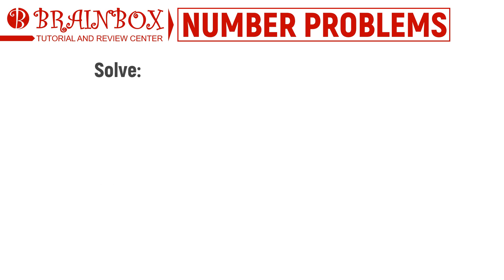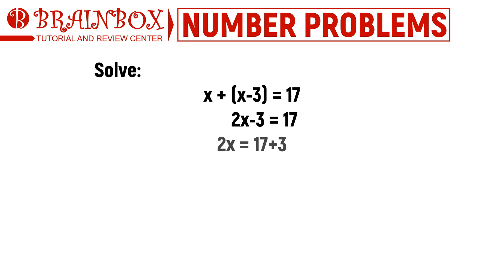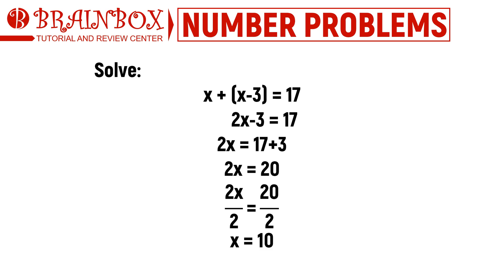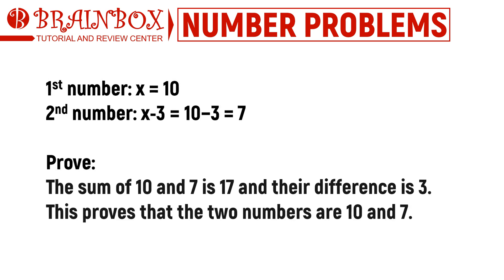We now move on to solving this equation. From here we get x equals 10. A special caution: the value of x in the equation is not always the final answer. The next step is to substitute x back into the representations. The first number, represented as x, is 10 — our larger number. Since the lesser number is x minus 3, its value is 7. To prove: the sum of 10 and 7 is 17, and the difference is 3. This confirms that the two numbers are 10 and 7.